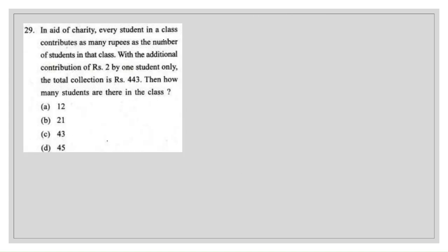The next question: in aid of charity, every student in a class contributes as many rupees as the number of students in that class. So if the number of students equals x, then each child gives x rupees, meaning the total amount collected will be x multiplied by x, which equals x squared.